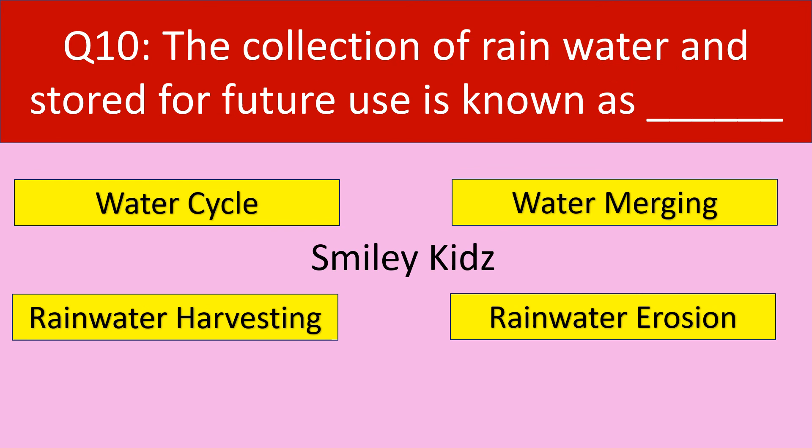The last question, question number 10. The collection of rainwater stored for future use is known as — your options are: water cycle, water merging, rainwater harvesting, rainwater erosion.